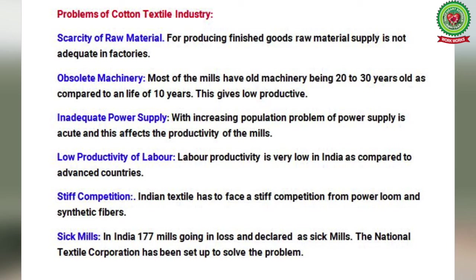The sixth problem is sick mills. About 177 mills have been going at a loss and have been declared as sick mills. The National Textile Corporation has been set up to solve this problem and has since taken over about 125 sick mills.